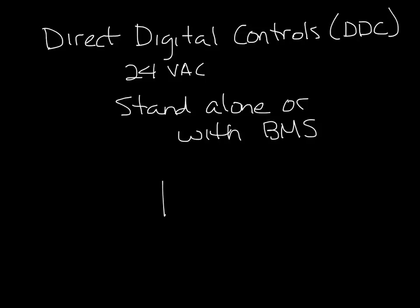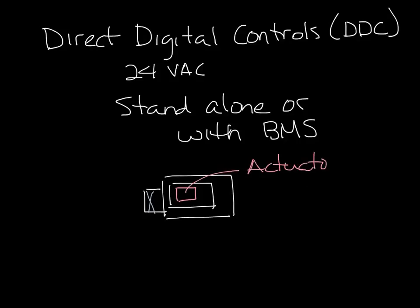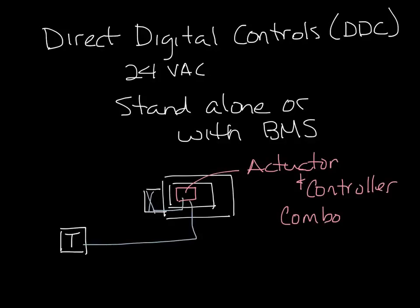So let's draw another single duct box. There's a flow sensor in the inlet, and then you have a controller-actuator combo usually. There are some models that are two parts, but frequently they're one combo unit now. And then a thermostat on the wall somewhere. Again, the thermostat is connected, and the flow sensor connected to the controller, which drives the actuator.